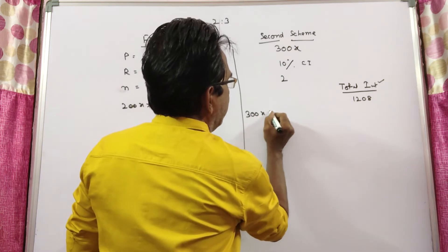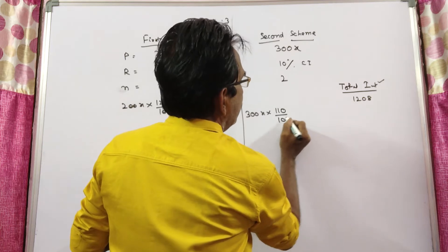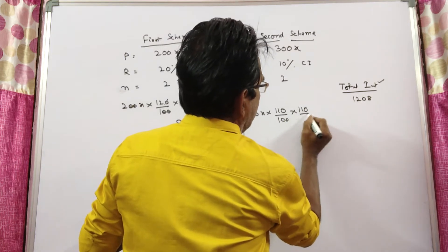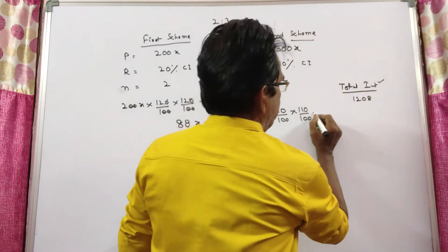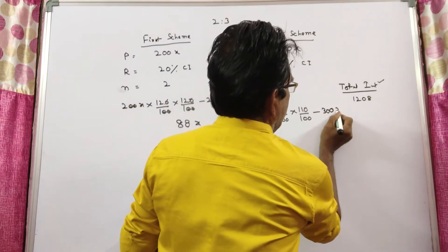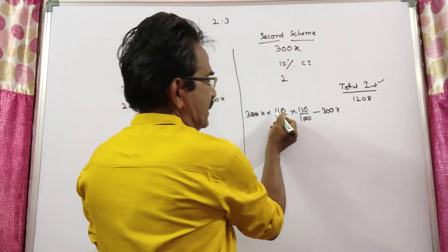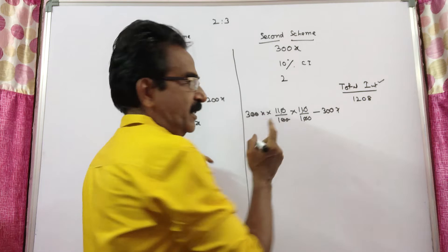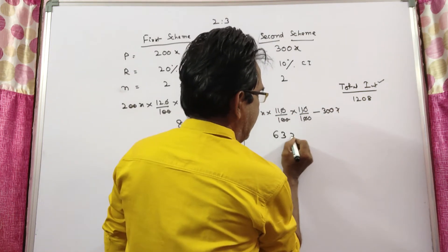300x is the principal p into 100 plus of 110 by 100 into 110 by 100. This is compound interest amount minus principal, minus principal 300x. So 0 gets cancelled. 11, 11, 121, 121 into 3, 363, 363 minus 300, 63x.